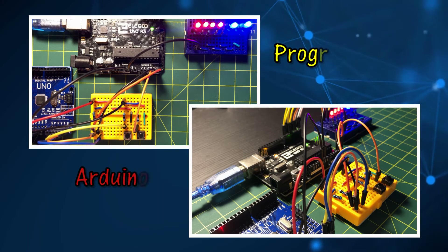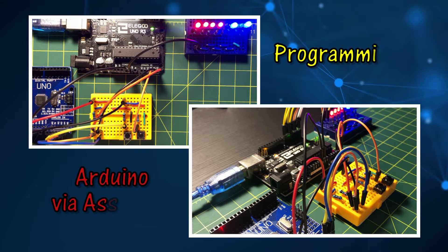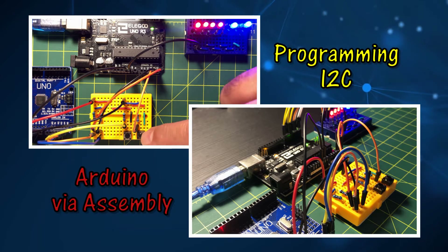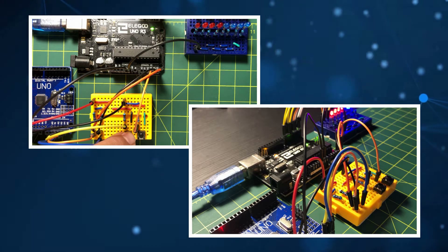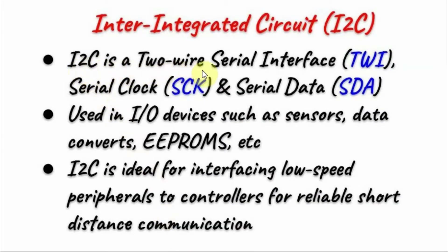In this video, the I2C module in the ATmega328 is programmed in assembly to establish a two-wire serial network between two Arduinos. I2C is a two-wire serial interface, also known as TWI, which has a serial clock line and a serial data line. I2C is used in IO devices such as sensors, data converters, and EEPROMs, and is ideal for interfacing low-speed peripherals to microcontrollers for reliable short-distance communication.